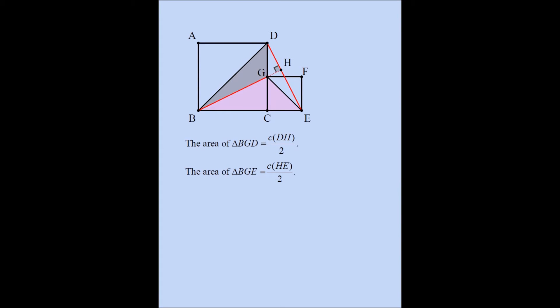Now let's consider triangle BGE, the pink triangle. The area of this pink triangle BGE has to be one half times height times base, which gives us c × HE / 2.